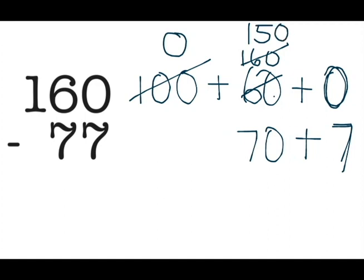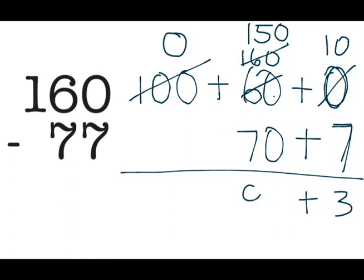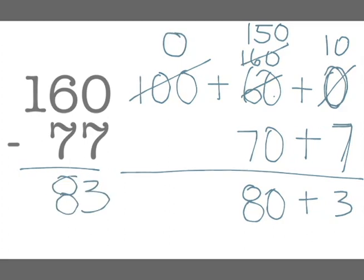I'm going to move it over to my ones place. Now I can go ahead and subtract: 10 minus 7 equals 3, and 150 minus 70 equals 80. 160 minus 77 equals 83. Thanks for watching!